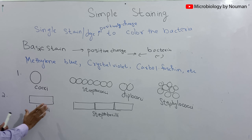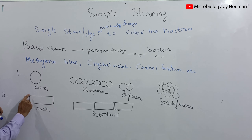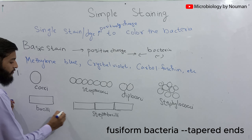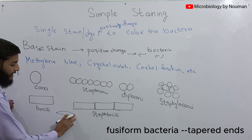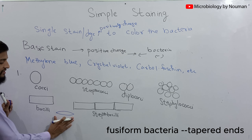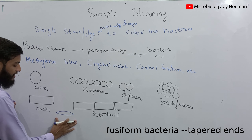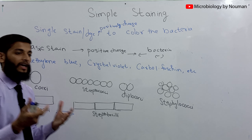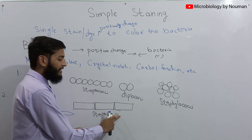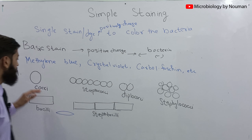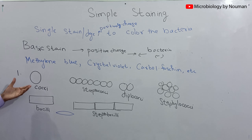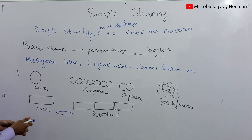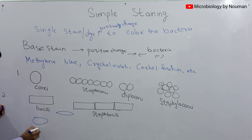Rod-shaped bacteria can have a proper rectangular structure with defined edges, or they may be fusiform bacteria that have a tapered end. Such bacteria are known as fusiform bacteria. The third possibility is a mix of both rod-shaped and cocci-shaped bacteria — in between cocci and bacilli — and such bacteria are called coccobacilli.